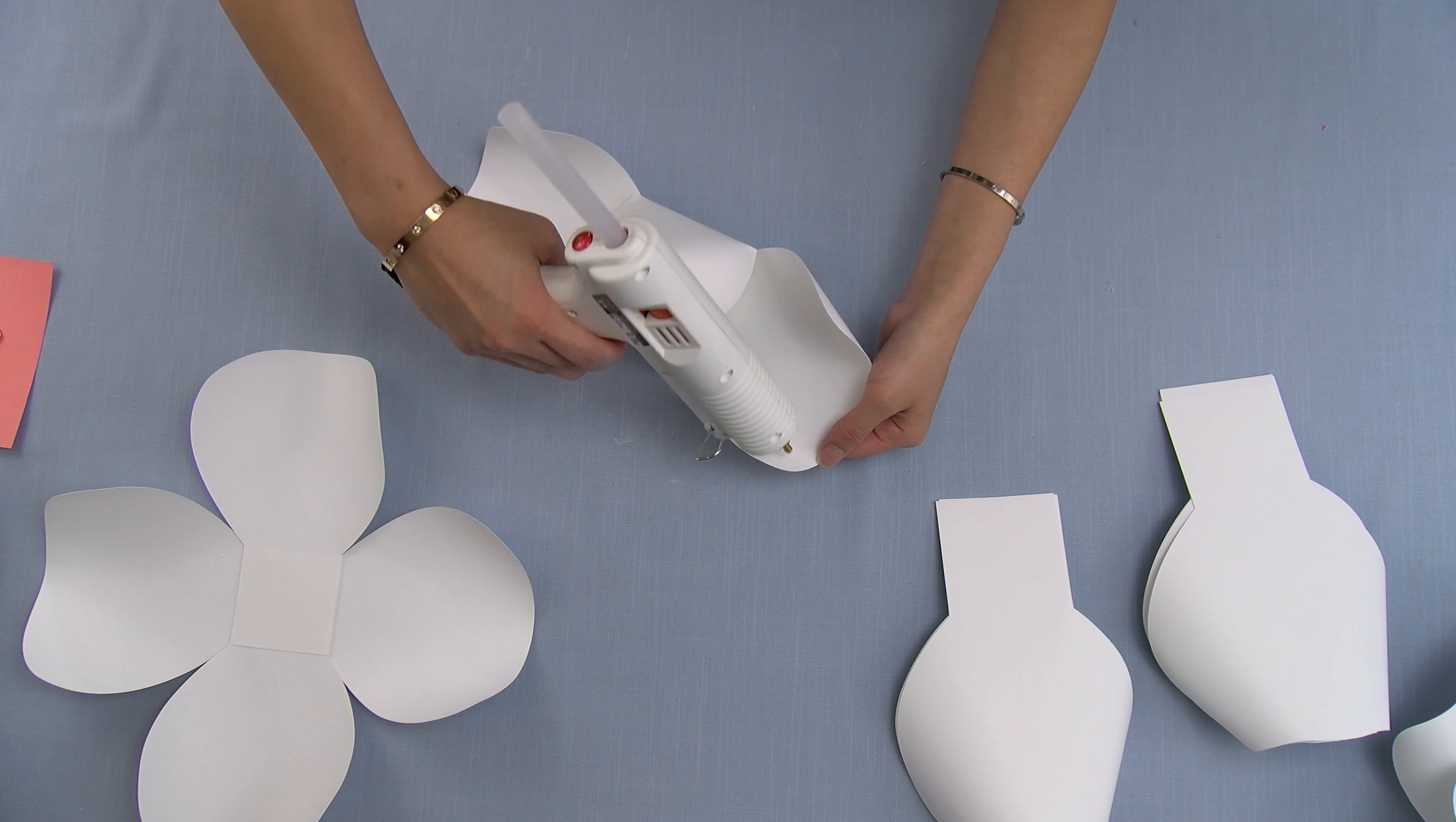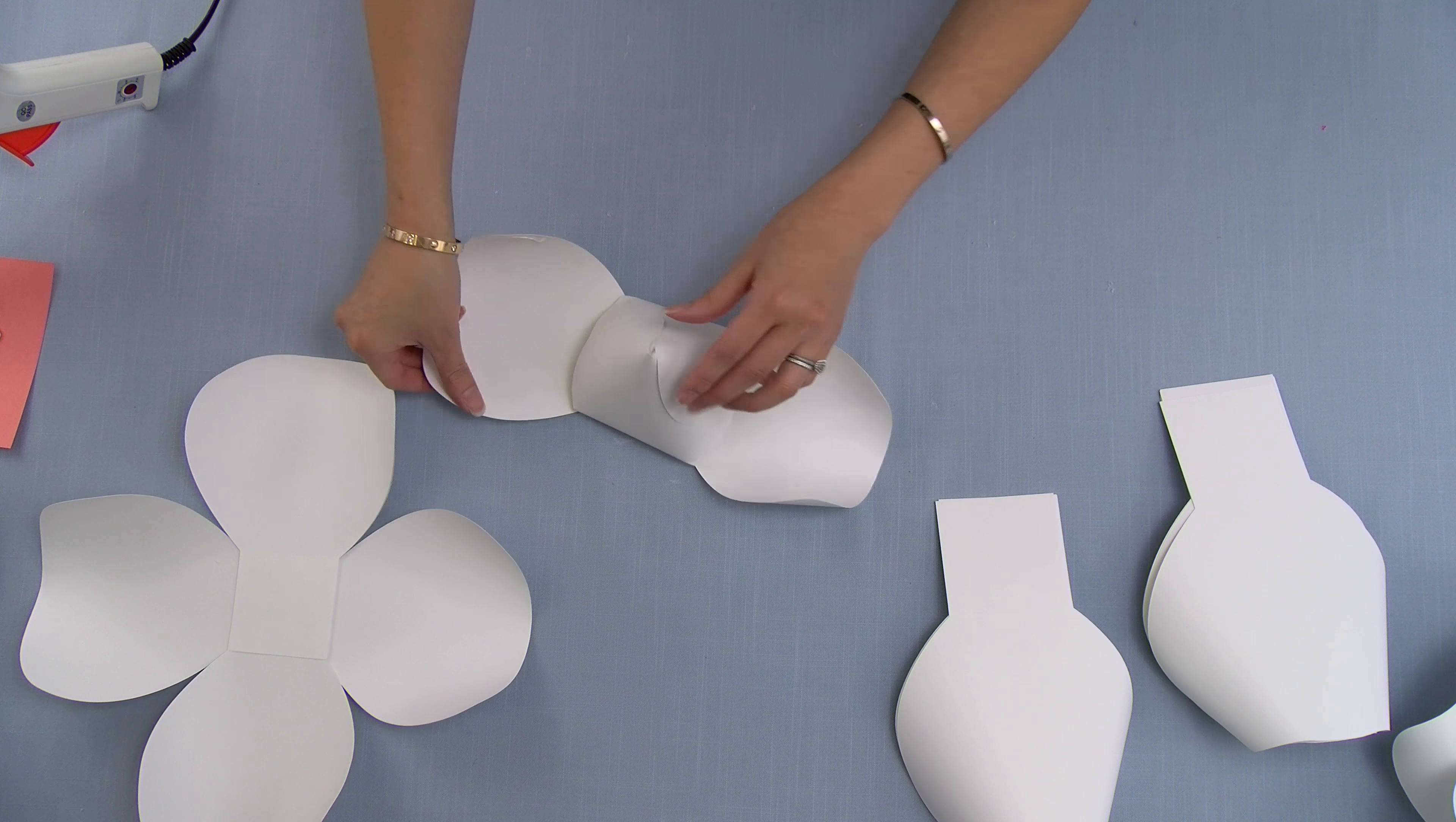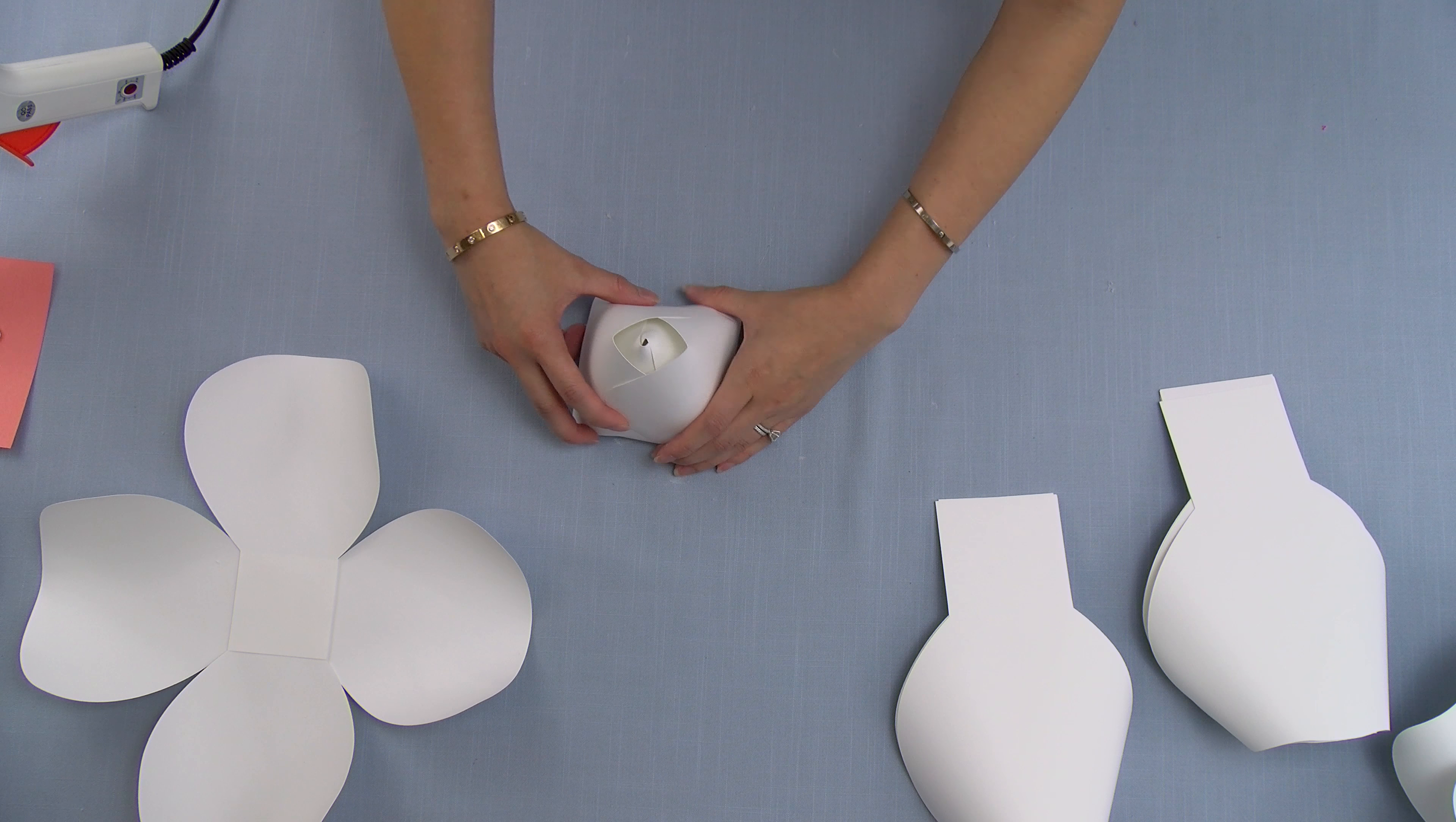Now I'm going to place glue on the opposite sides of the opposite petals, just the top part here. I'm going to bring them together and glue them together like so.